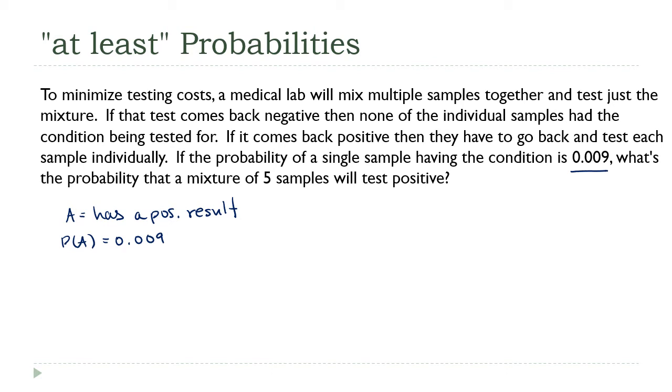What does it mean for a sample to test positive? If the mixture has just one positive, if just one of the five was positive, I'm going to get a positive result. But two will also give me a positive result, so will three, four, and five. What I want to do is calculate the probability of at least one positive. That would give me a positive result from the mix.